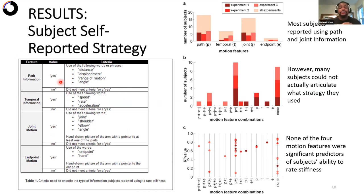And we codified that such that there is a yes or no for each one of those quantities. And what we looked for, for path information specifically, was the words distance, displacement, range of motion, angle. For temporal information, speed, rate, acceleration. And for joint motion, joint, shoulder, elbow, angle. And then for endpoint motion, endpoint or hand. And also if subjects drew a picture and pointed to the endpoint or the joint, we were able to codify that as well.